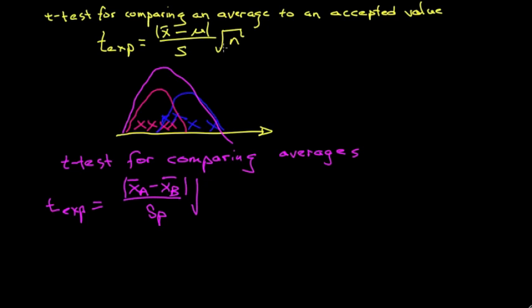It also will involve number of measurements. We take the product of the number of measurements in the first set times the number of measurements in the second set. Divide that by the sum of those two values. Take that ratio and then take the square root.